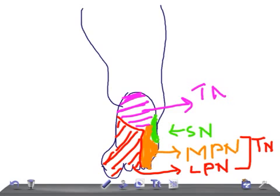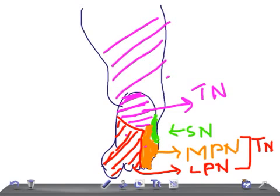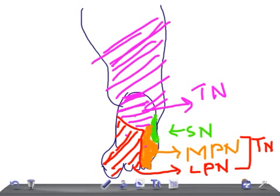So looking at the distribution, all of this together you can say is the tibial nerve — so a lot is some part of this. The tibial nerve continues up to here, and it continues over here as well.